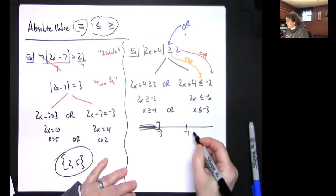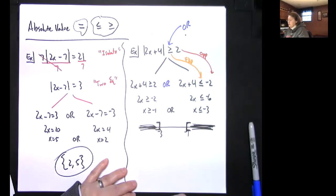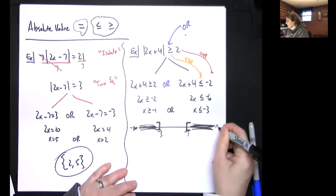This says x is greater than negative 1, so that would be shading this way with the square brackets. Looks good, that's an or. Ors are supposed to look like that. I'd have negative infinity down here, I'd have infinity down there.